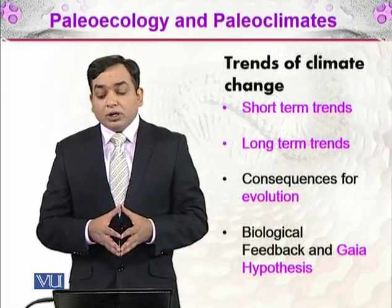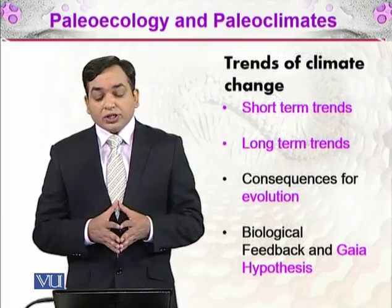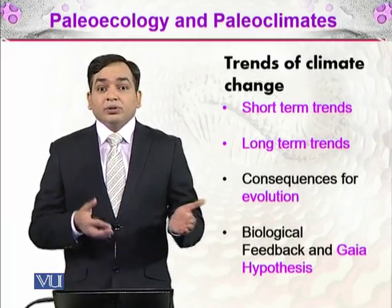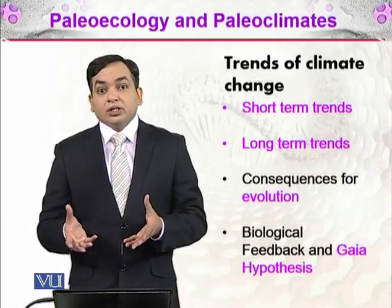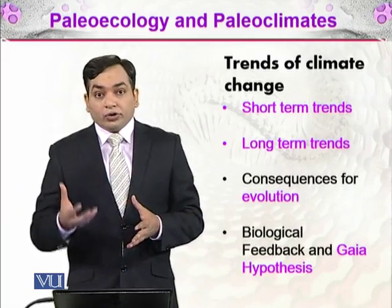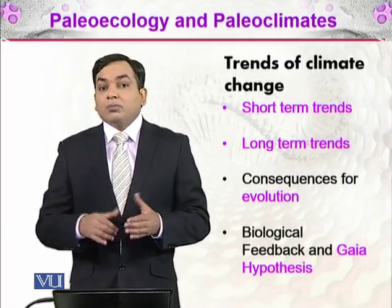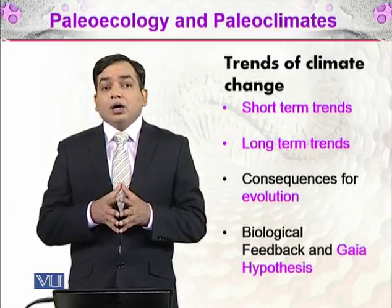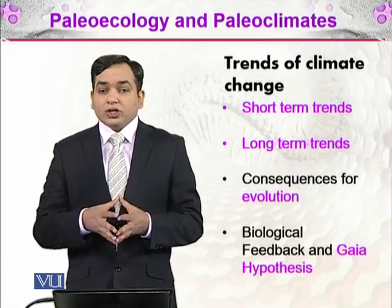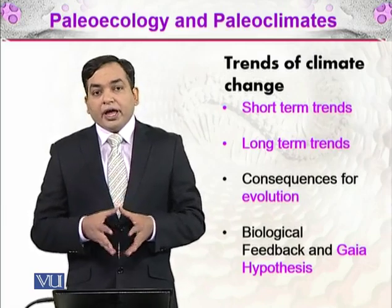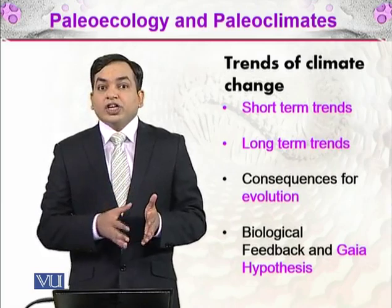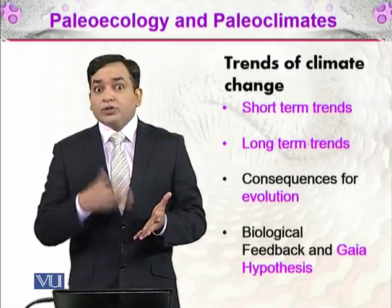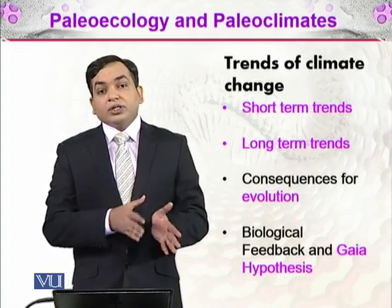There are different trends of climate change. Short-term trends are less than 100,000 years — for example, the ice ages. Then there are long-term trends, which span more than 100,000 years. There are also consequences for evolution: if the environment and climate are changing, organisms must adapt, and when they adapt they change their characteristics, resulting in new species. There is much more selection pressure, which results in evolution.